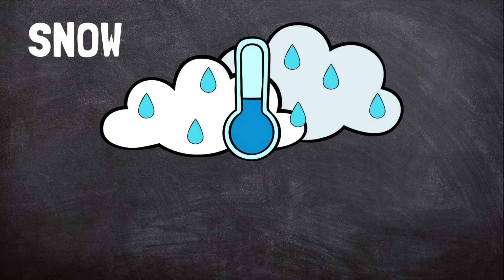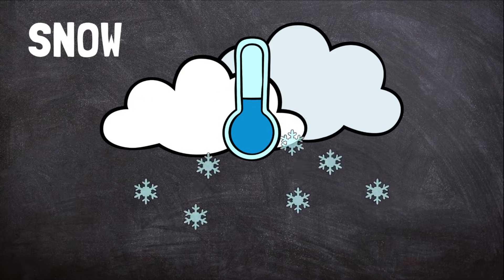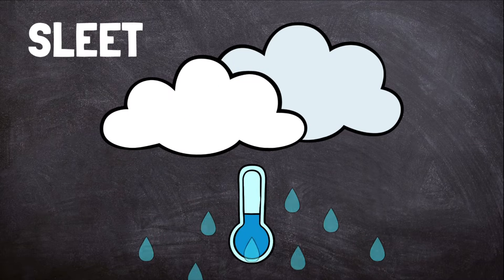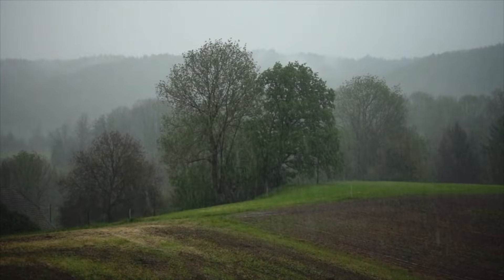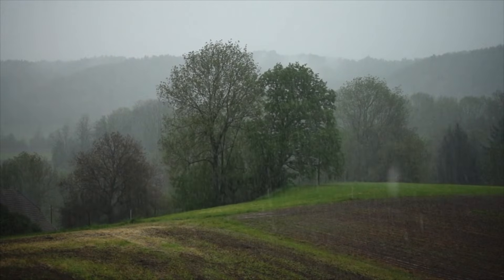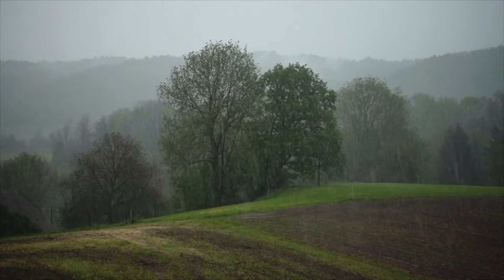Sleet is different than snow. To make snow, the water droplets must freeze in the cloud. To make sleet, the water droplets freeze after they leave the cloud on their way to the ground. Sleet begins as rain falling from the cloud, but before it hits the ground, it turns into ice. Sleet is sometimes called freezing rain.